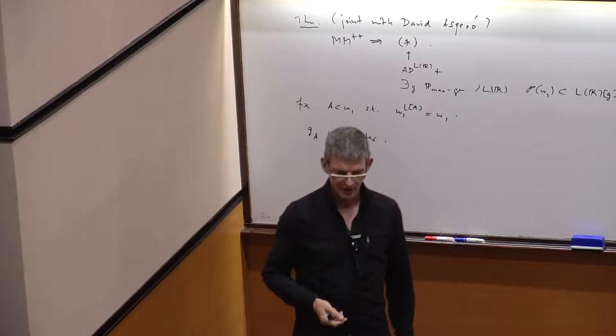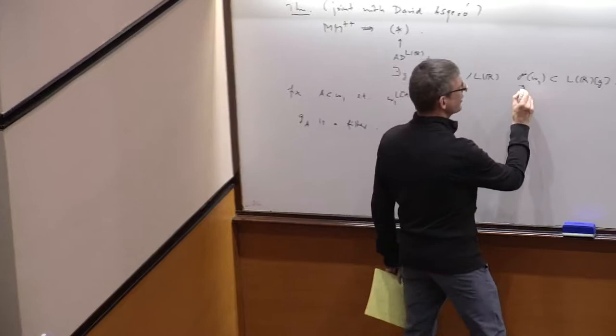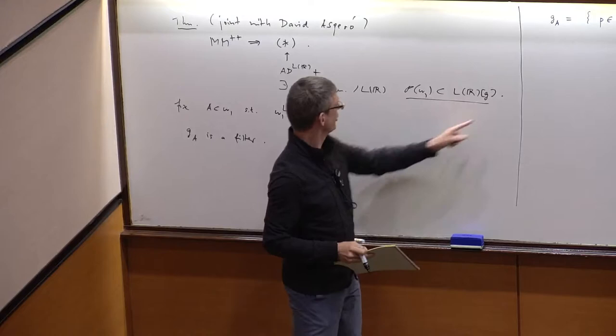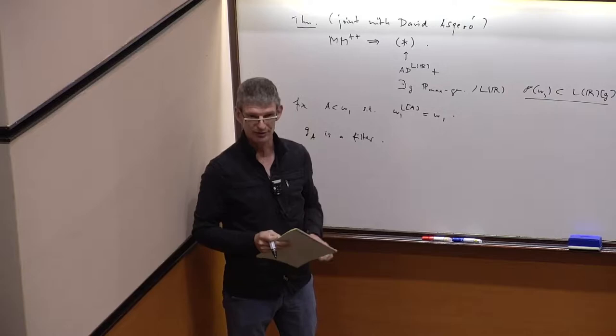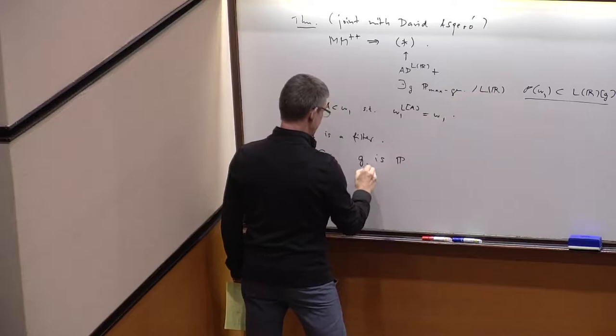That is a filter and the very same argument — there is this argument why if NS is saturated and P(ω₁)# exists then Δ¹₂ is L[2] — this argument also takes care of this kind of thing. So if you are able to show that this filter is generic over L(ℝ), we already know the rest, and that's all that's left to do.